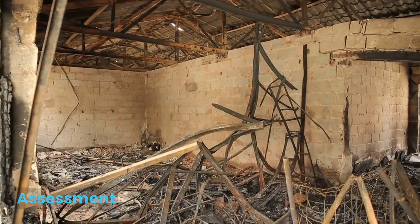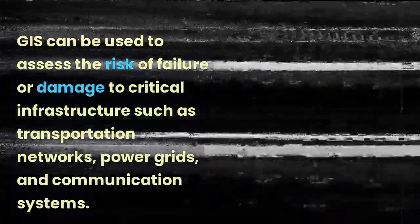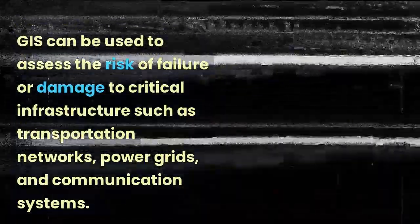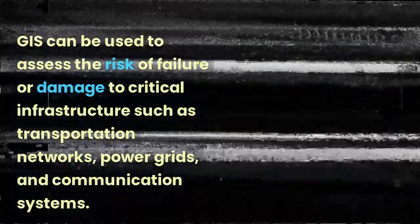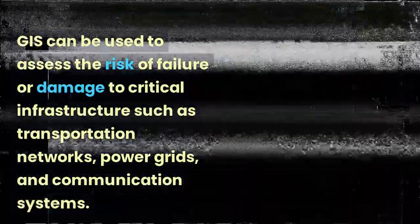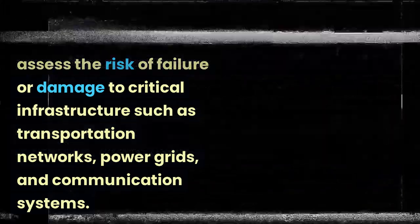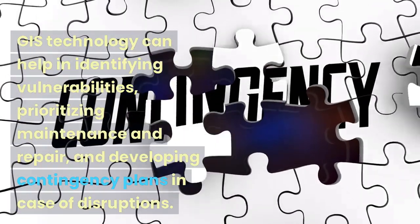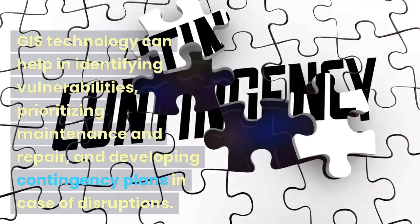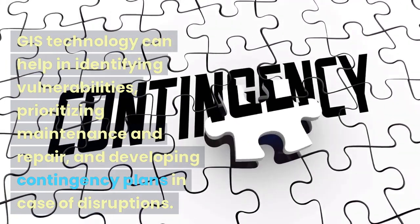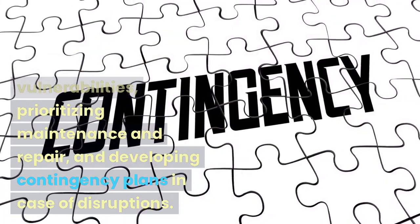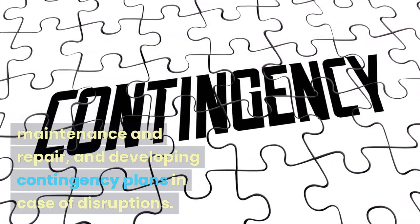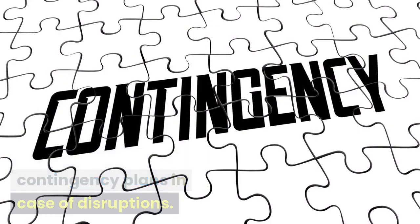Infrastructure Risk Assessment: GIS can be used to assess the risk of failure or damage to critical infrastructure such as transportation networks, power grids, and communication systems. GIS technology can help in identifying vulnerabilities, prioritizing maintenance and repair, and developing contingency plans in case of disruptions.